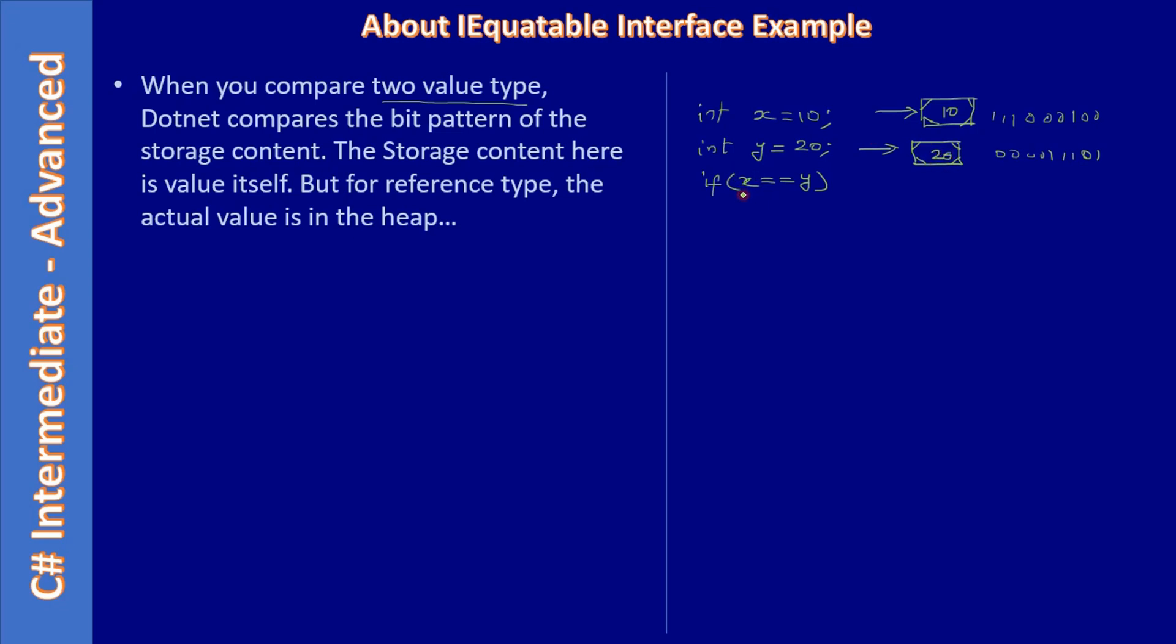Here when we compare x equal to y, these two bit patterns are compared. These two bit patterns represent the values themselves. So here we are comparing the values, and 10 is not equal to 20, so we will be getting false. Now let's consider reference types.